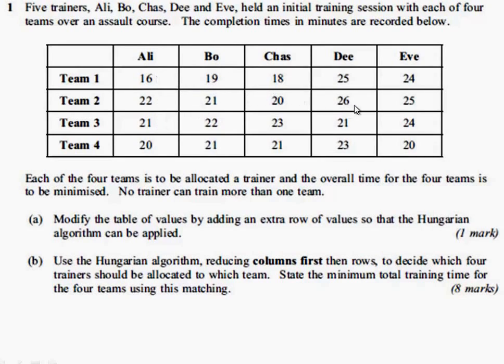That each trainer has taken with each team. We can see that there's a range of different times. Some of the trainers being better with some teams. Other trainers being better with others. The idea is for each of the four teams to be allocated a trainer. And the overall time to be minimised. With any trainer having a maximum of one team. Obviously, at the end, one of the five trainers won't be allocated a team as there are only four teams.